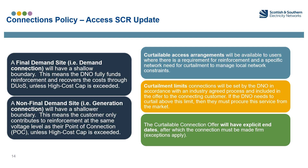Where there is reinforcement identified, the customer can request a curtailable connection. A curtailable access arrangement will be available to users where there is a requirement for reinforcement and a specific network need for curtailment to manage local network constraints. For example, if you are a generation connection and you have triggered reinforcement at the voltage level above, SSEN can offer a curtailable connection to allow you to get connected ahead of the reinforcement being completed, and will provide you with that within an offer.